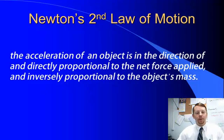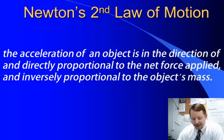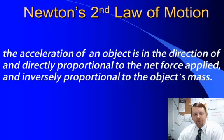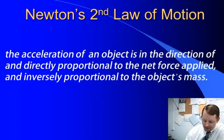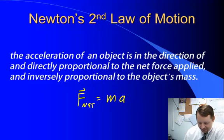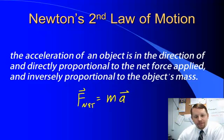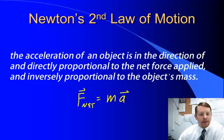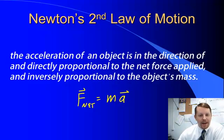Newton's second law of motion says that the acceleration of an object is in the direction of, and directly proportional to, the net force applied. And it's inversely proportional to the object's mass. Written mathematically, the net force vector is equal to mass times acceleration. So if you apply a force to an object, the object is going to accelerate in the direction of that force. The bigger the force you apply, the more acceleration. The bigger the object's mass, the less acceleration.